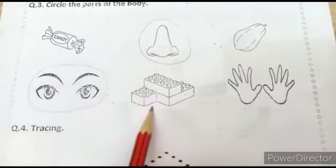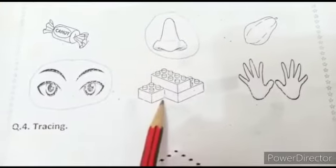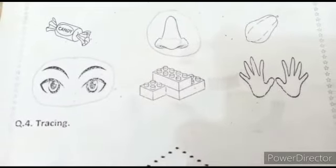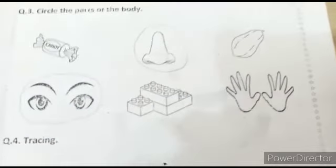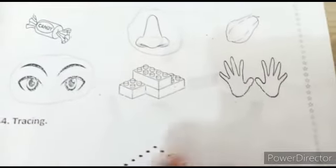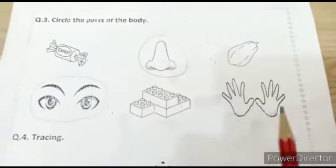Here. What is this? This is block. Kya hai yeh? Block. Block is a part of the body? No. No. It is a playing. It is a playing material. Hanna? Isse haam khelte hai? Okay.